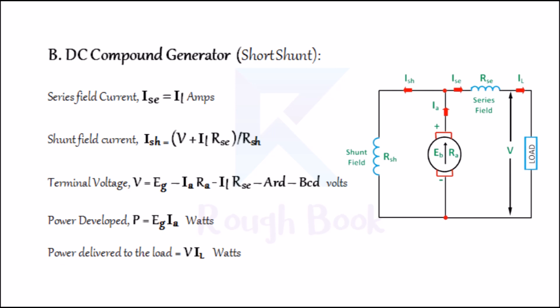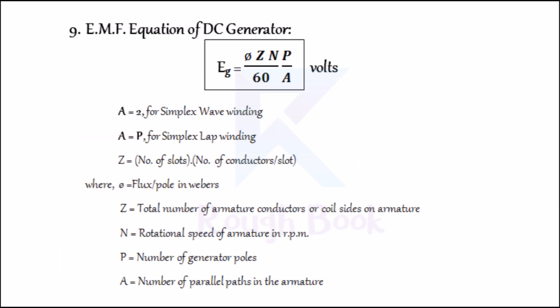Number nine: EMF equation of DC generator, given by EG = (φ × Z × N / 60) × (P / A) in volts, where A = 2 for simplex wave winding and A = P for simplex lap winding. Z = number of slots × number of conductors per slot. φ is the flux per pole in Webers. Z is the total number of armature conductors or coil sides on armature. N is the rotational speed of armature in RPM. P is the number of generator poles. A is the number of parallel paths in the armature, and E is the EMF induced in a parallel path in the armature.